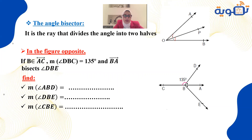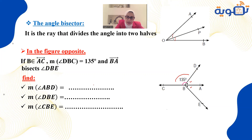If B belongs to the straight line AC, and the measurement of angle DBC is 135 degrees, and ray BA bisects angle DBE, find the measurement of angle ABD. Since B is on a straight line, the total is 180 degrees. So 180 minus 135 equals 45 degrees for angle ABD.